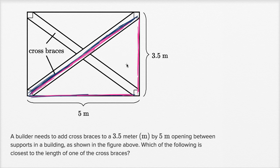The Pythagorean theorem tells us that the sum of the two shorter sides squared, so five squared plus 3.5 squared, is going to equal the length of the hypotenuse squared. Let's call that c for cross braces, so it equals c squared.